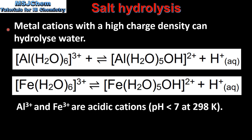Next we look at metal cations. Metal cations with a high charge density can hydrolyze water. In these two examples we have the Al³⁺ ion and the Fe³⁺ ion. Both ions have a high enough charge density to hydrolyze a water molecule to produce the hydronium ion. So Al³⁺ and Fe³⁺ are acidic cations, with a pH of less than 7 at 298 K.